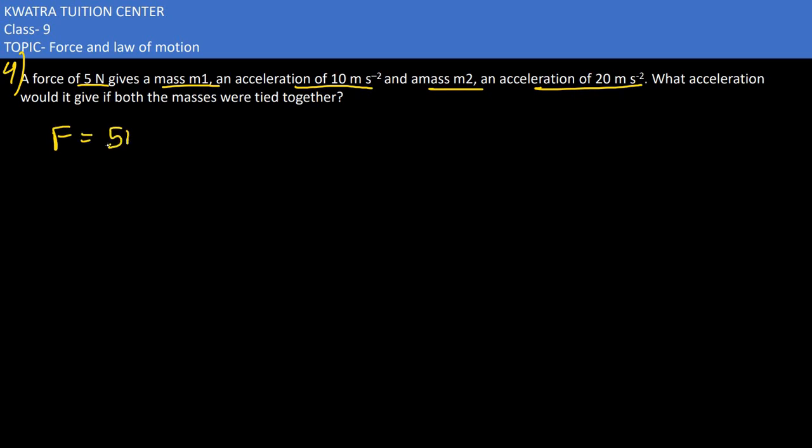Force in this situation is 5 N. Now M1 we need to find. A1 in this case is 10 m per second square. M1 would be force over acceleration, so 5 over 10, which equals half kg.